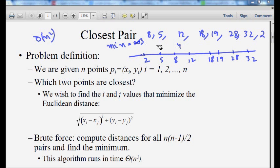Between 12 and 18, the distance is 6, which is greater than min so we leave it. Between 19 and 18 the distance is 1, so we update and minimum becomes 1, the closest pair till now.